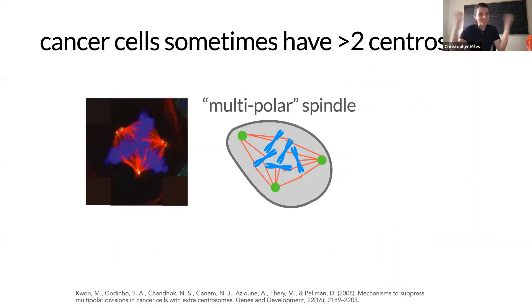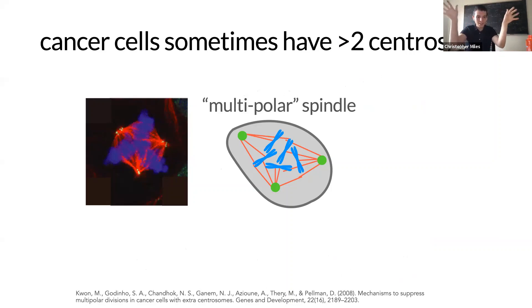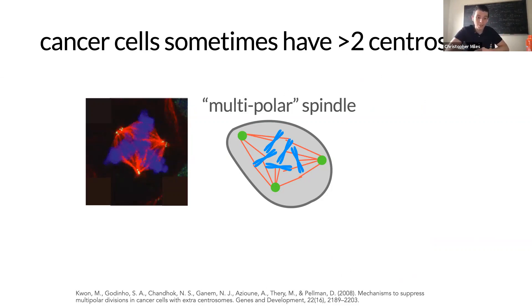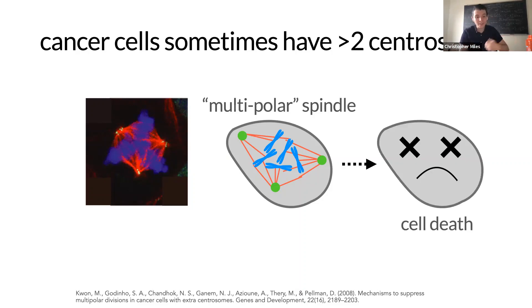Cancer cells are defective — that's what makes them cancer cells. Some cancer cells are mutated so that they have extra centrosomes, the things microtubules emanate from. The image on the left shows a cancer cell undergoing mitosis, and it looks quite different — not the classic bipolar structure but a three-sided structure because the cancer cell had an extra centrosome. Cells are smart: they can detect when things go wrong and self-destruct rather than propagate a weird mutation.